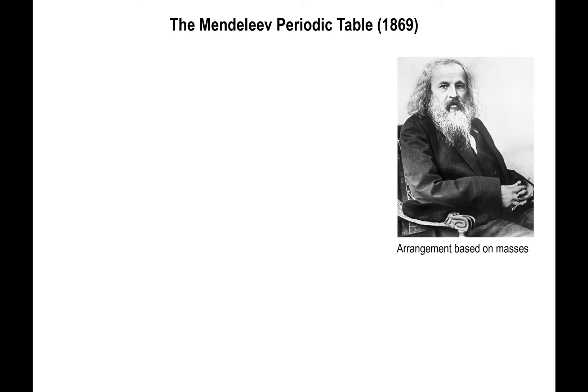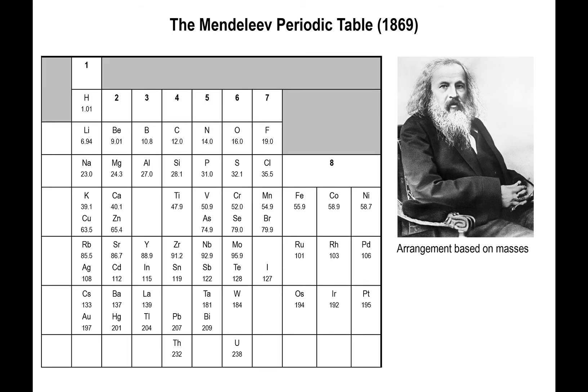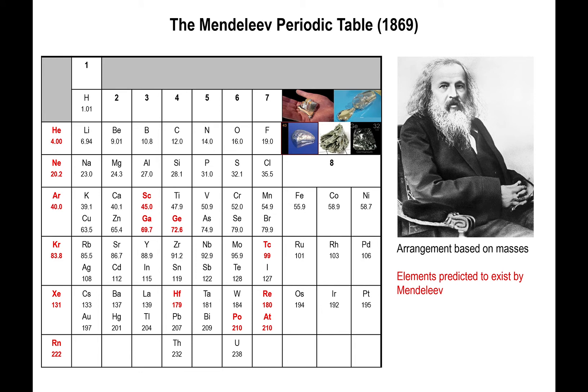Five years later, Mendeleev came up with an early version of the periodic table that looks closer to the one we know today. He arranged the elements in columns, and he did something Mayer didn't do — he actually used his table to predict elements that weren't known at the time. He went further than just predicting that they would exist: using the physical properties of known elements and where they fell in the table, he made predictions about how these unknown elements compared to the known groups.